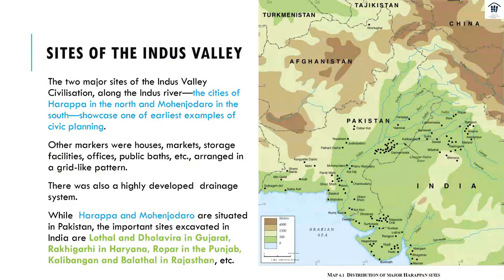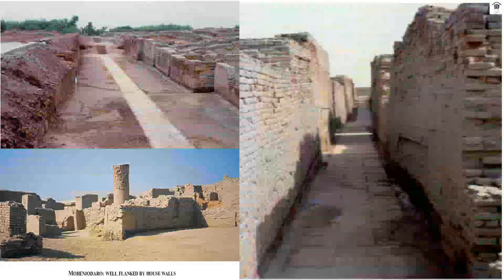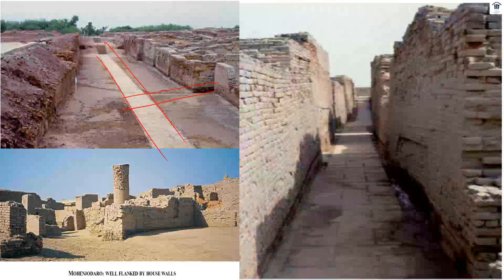Before we look at the arts, let's look at the sites of Indus Valley. The major sites are Harappa, on the banks of the Ravi, and Mohenjo-Daro, on the bank of the river Indus. These cities were the earliest examples of civic planning. Other features were houses, markets, storage facilities, offices, and public baths, all arranged in a grid-like pattern. You can see the roads in a grid-like pattern. There is a well flanked by houses in Mohenjo-Daro, and the streets are very well laid down. These are all actual pictures from Mohenjo-Daro. There was also a highly developed drainage system.